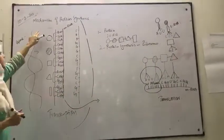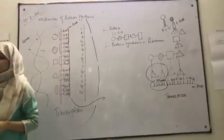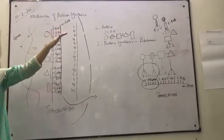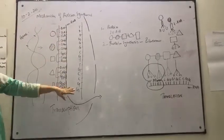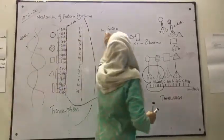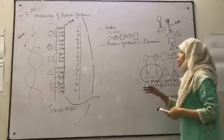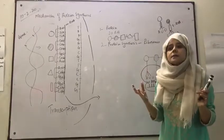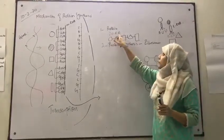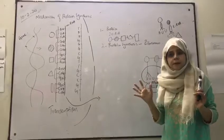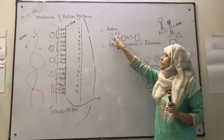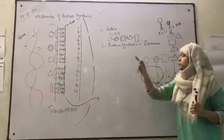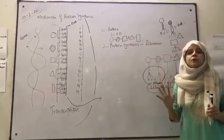Okay class, today we are going to study about the mechanism of protein synthesis, but before going into the detail of the mechanism of protein synthesis, you should know about certain things. What are proteins and what proteins are made up of? Proteins are made up of amino acids. How many amino acids are present? There are total 20 amino acids. These 20 amino acids are linked together in different combinations to form various protein molecules.